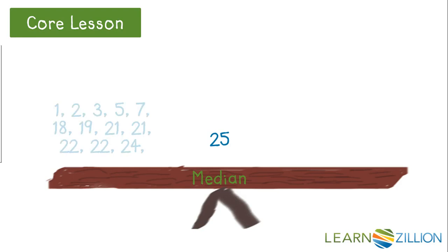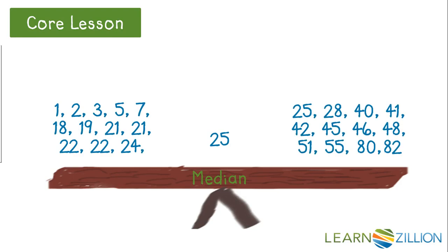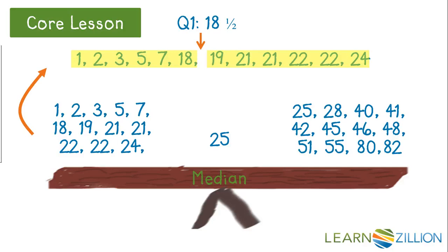Now that I have my two halves and the median identified, I can split the lower half in half to find quartile 1. When I cross off six values from the beginning and six from the end, I don't have a number in the middle, so I will need to find the number that is halfway between 18 and 19, which is 18 and a half.